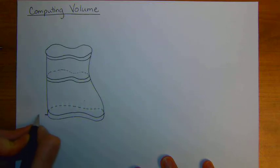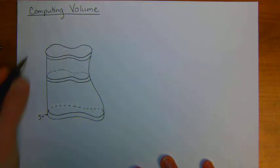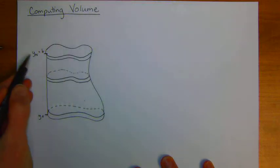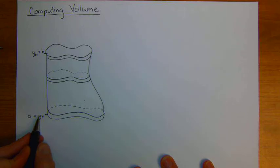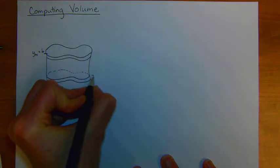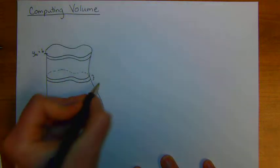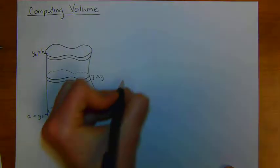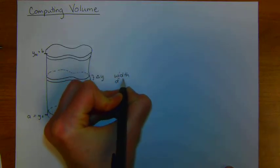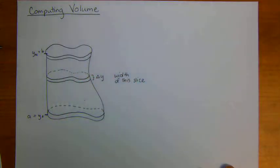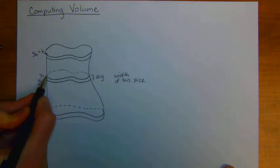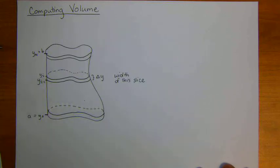The notation that we think about is that we're going to start with y-not being at the very bottom and y sub n at the top. If I'm looking at some generic slice in the middle, the height of this slice is going to be delta y, the width of that slice of bread. This is y sub i minus 1 and y sub i, the starting and ending y values for this width of the slice of bread.